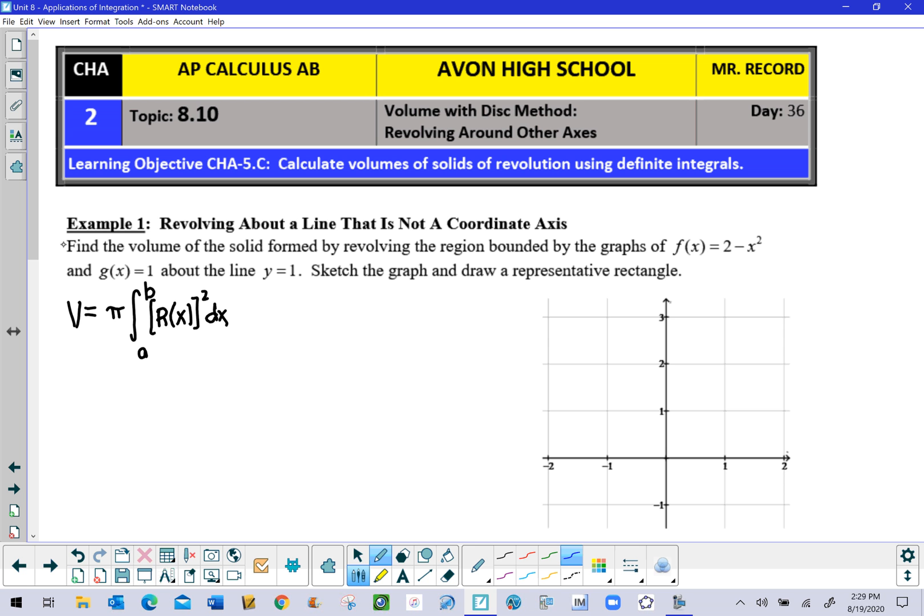We're going to find the volume of the solid formed by revolving the region bounded by the graphs of f of x equal 2 minus x squared, which I'm going to graph here in blue, g of x equal 1, which I'm going to graph in red, and the axis of revolution, which I'm going to dash in with a black dashed line, is y equal 1. As always, we want to set up the sketch, draw it in, and put our representative rectangle in.